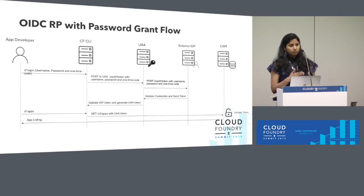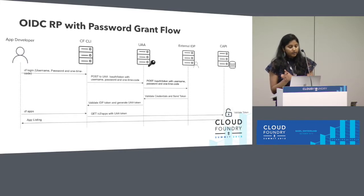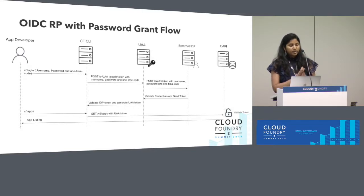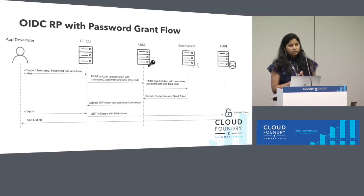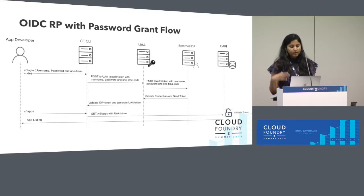The CF CLI doesn't need to care — it uses the same flow. It collects those credentials and posts them to UAA's token endpoint with the username, password, and the MFA or one-time code. UAA then acts as a client to the external identity provider and presents the same information through a back channel. Once the IDP validates those credentials, it generates a token and presents it back to UAA. Once UAA validates the token, it generates a UAA token for CF CLI. Once CF CLI receives the token, it hits the Cloud Controller API, which trusts UAA tokens, validates the signature, and provides the resources back to the CF CLI.